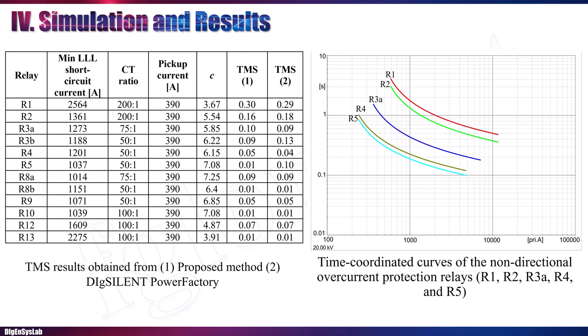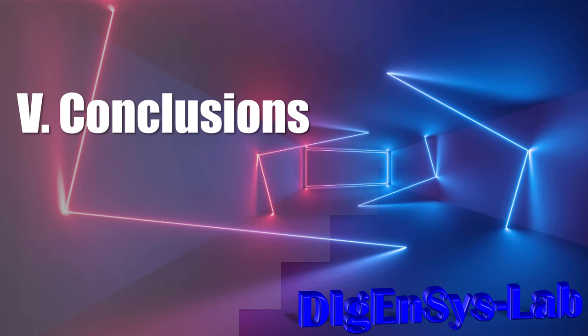We also used DIgSILENT PowerFactory, a well-known software with automatic overcurrent protection coordination capability. We compare results between column one — the proposed method — and column two — results from DIgSILENT PowerFactory. The results are almost similar, with discrepancy below 0.01. The time-current diagram shows coordination between several relays on the feeder, validating that the proposed method creates proper time-current coordination.